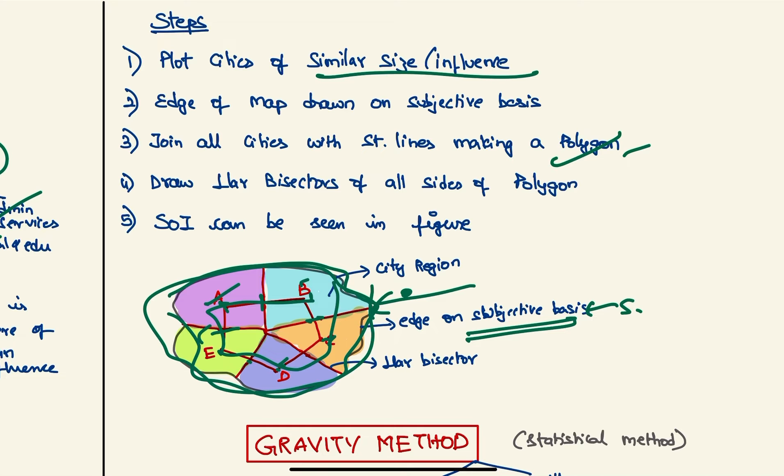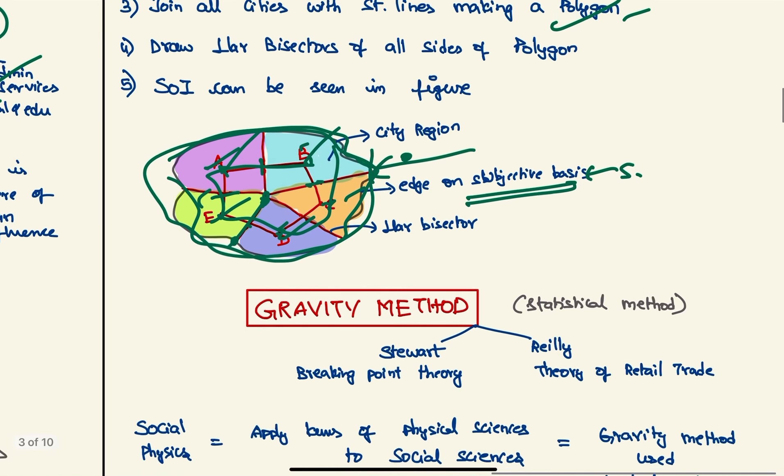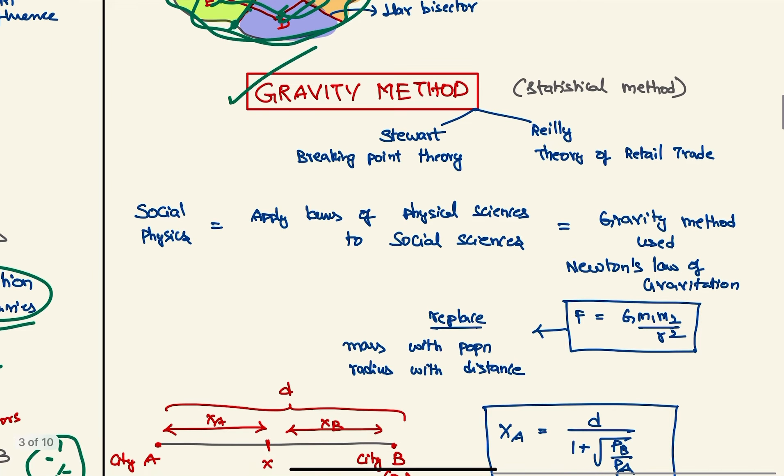We draw perpendicular bisectors for each side of the polygon and join them. These perpendicular bisectors are joined to the edge of the map and also the center, so these would be the city regions of each city. So last method we have is the gravity method. This is also a statistical method.